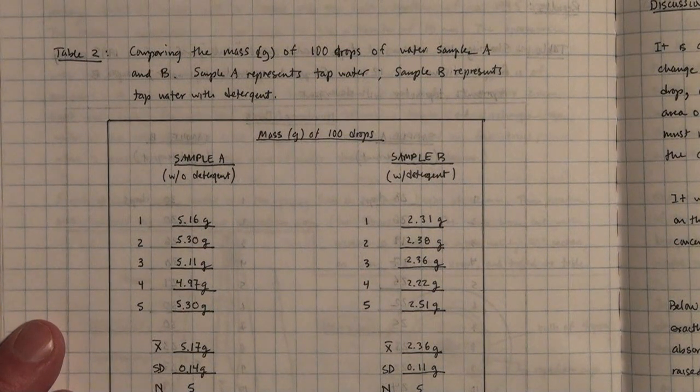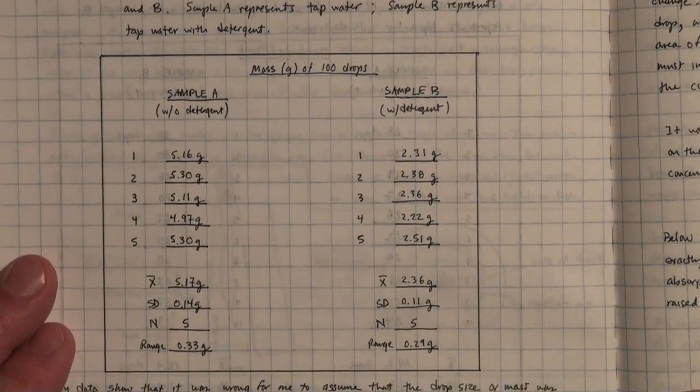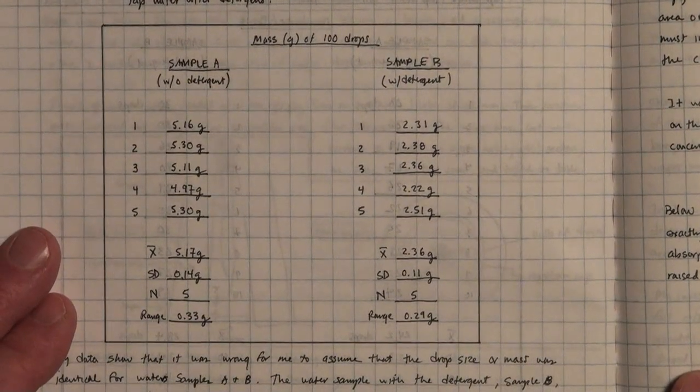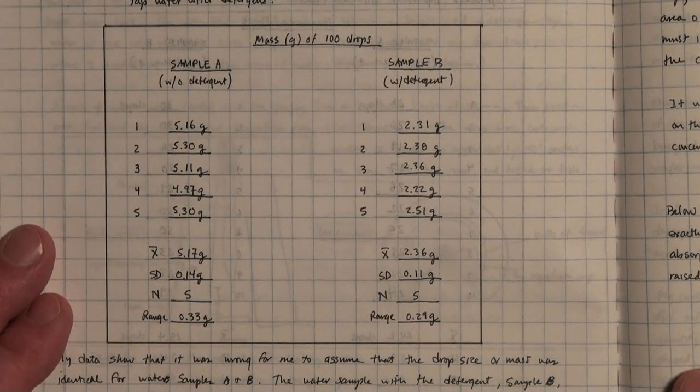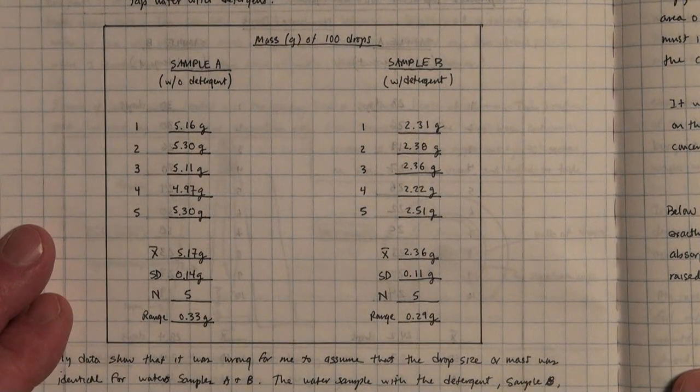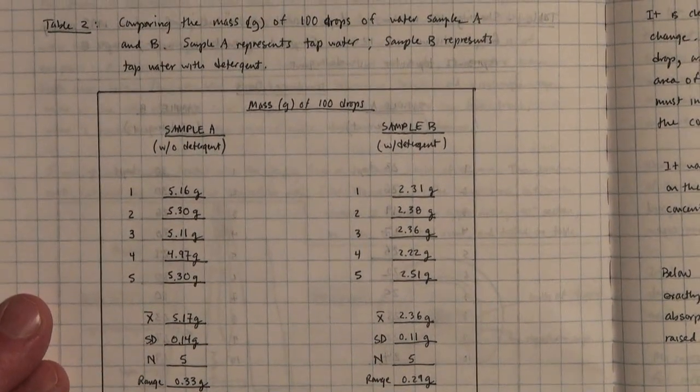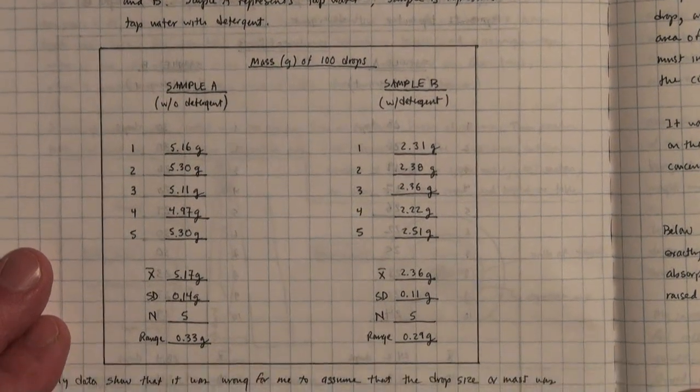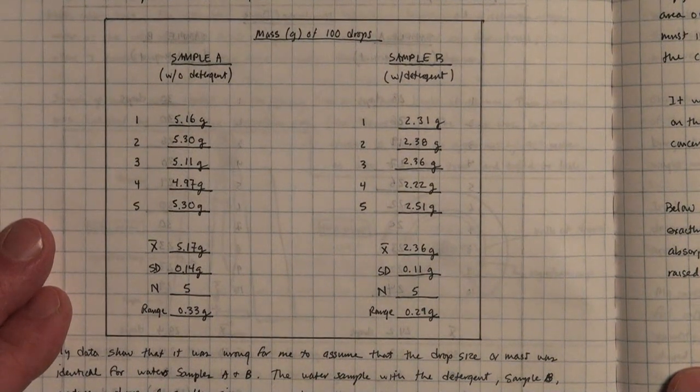Table 2 compares the mass in grams of 100 drops of water samples A and B. Sample A represents tap water, and sample B represents tap water with detergent. My data show that it was wrong for me to assume that the drop size or mass was identical for water samples A and B. The water sample with the detergent, sample B, produces drops of water smaller in size or mass than the sample for tap water, sample A.